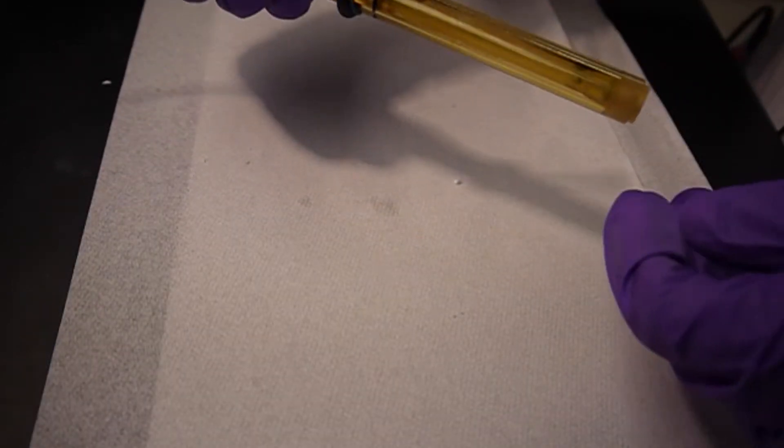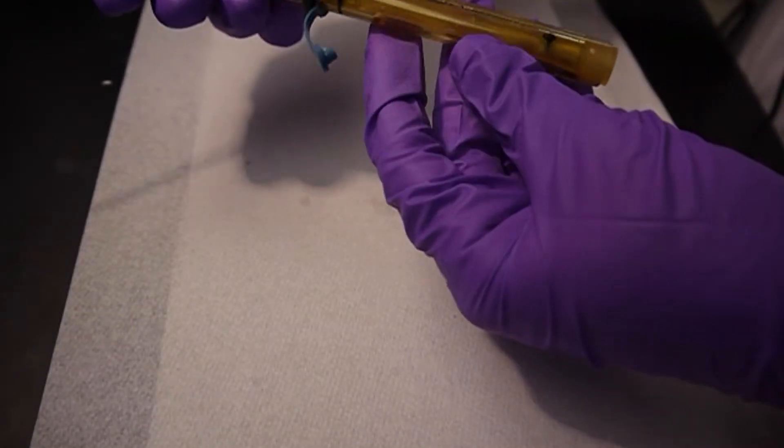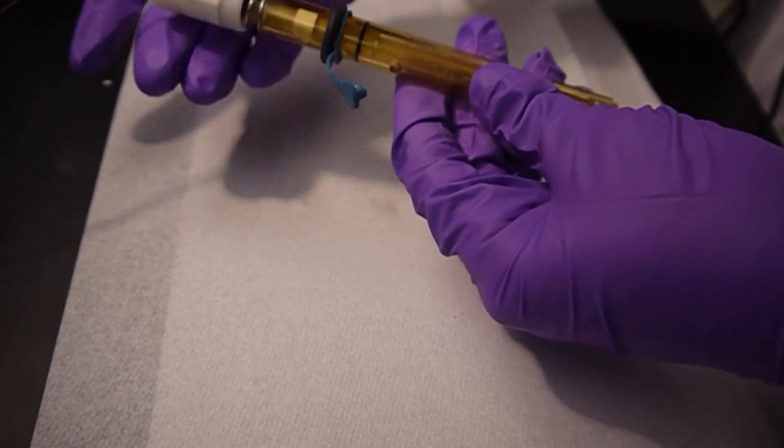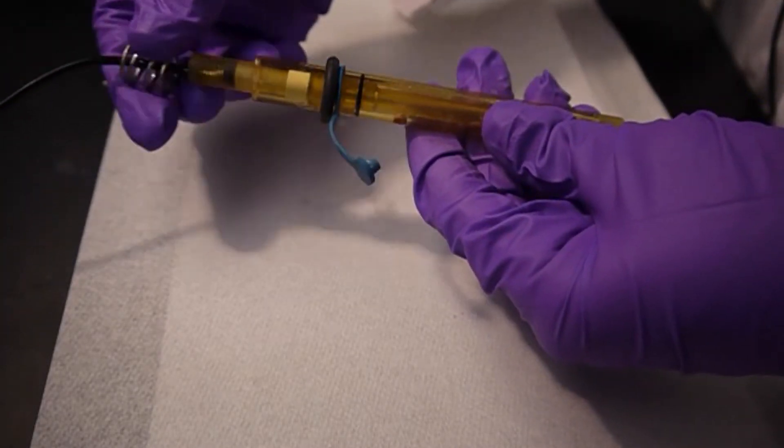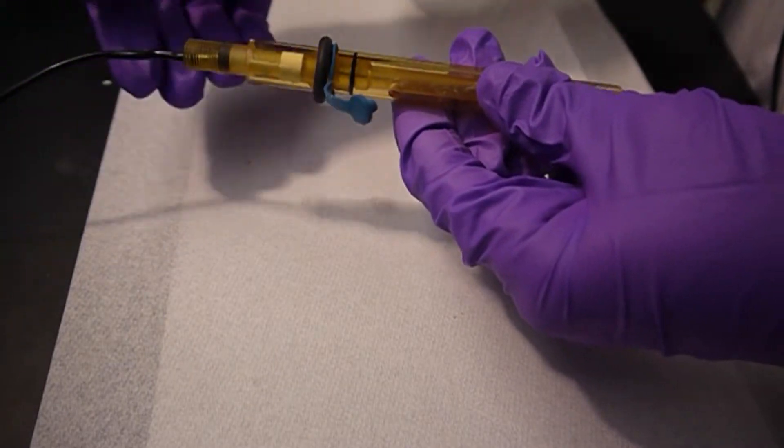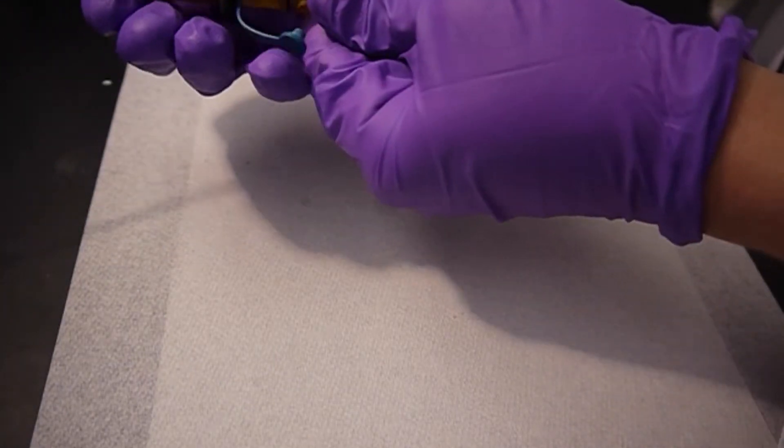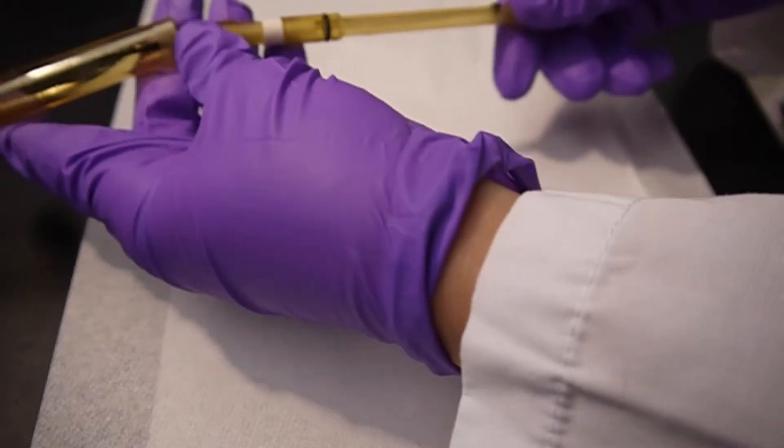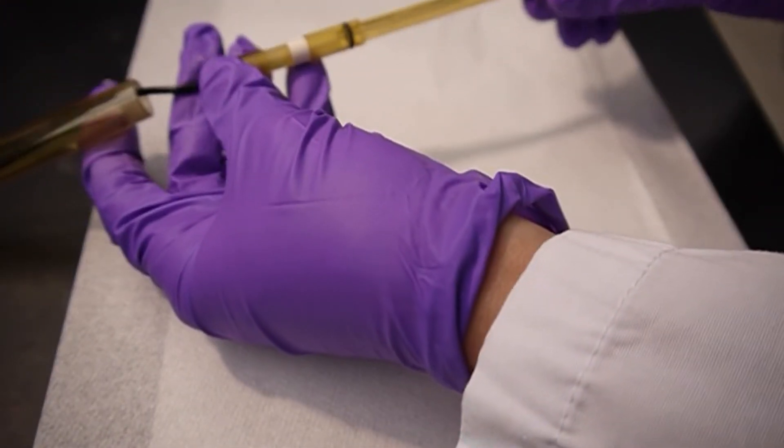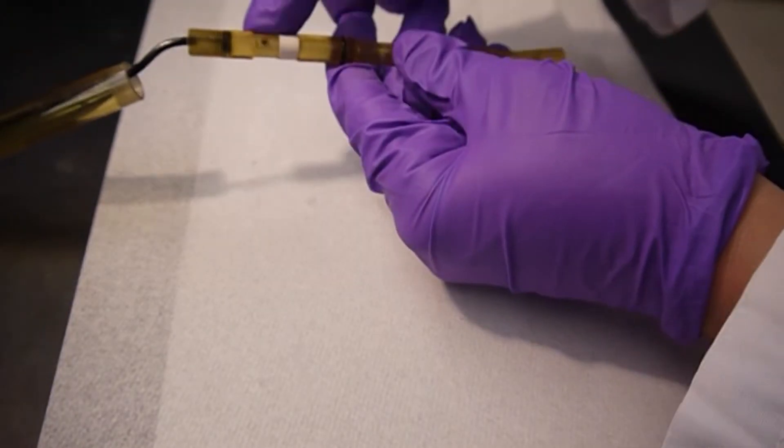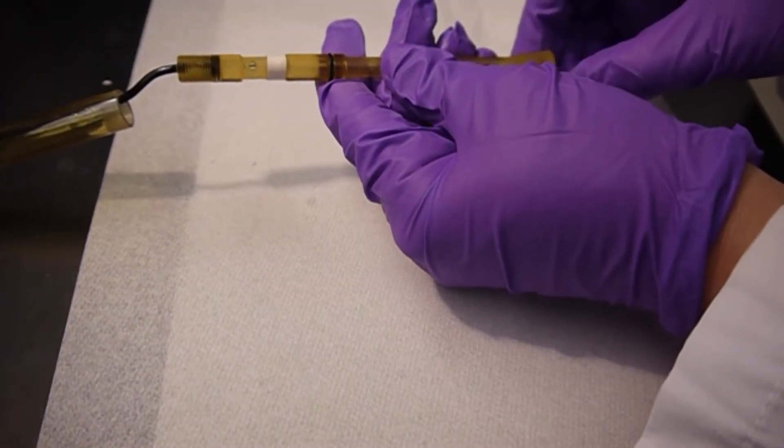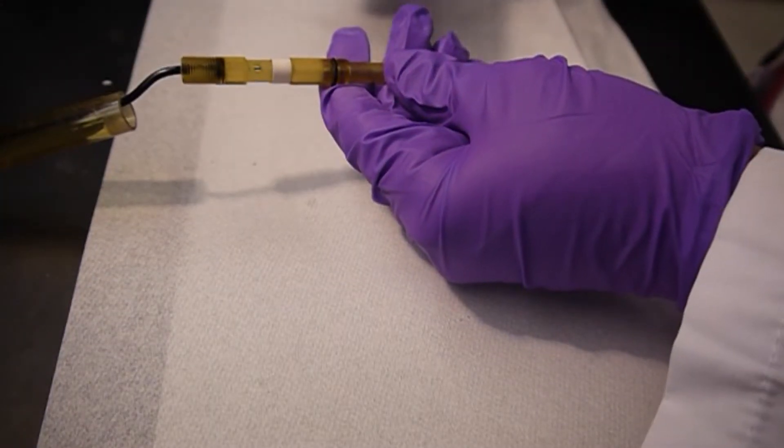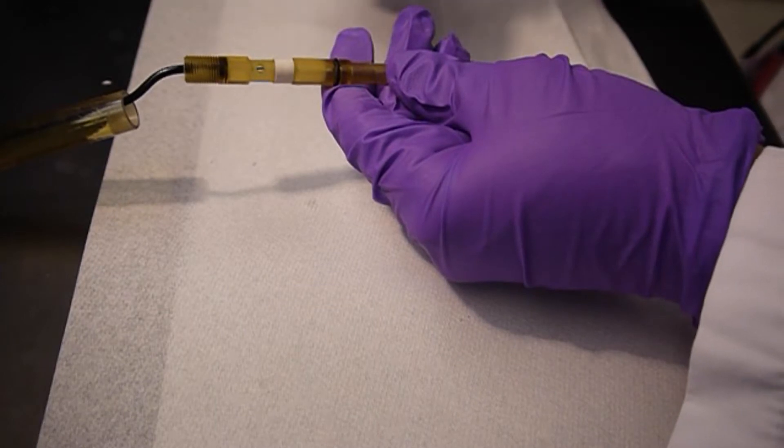Alright, so this is our reference electrode. In order to fill it, we need to take it apart. So we're going to unscrew the cap. There's a little spring here that helps hold everything in place tightly. And this inner part pushes out of the outer part. And you'll see in the inner part there's a hole here.